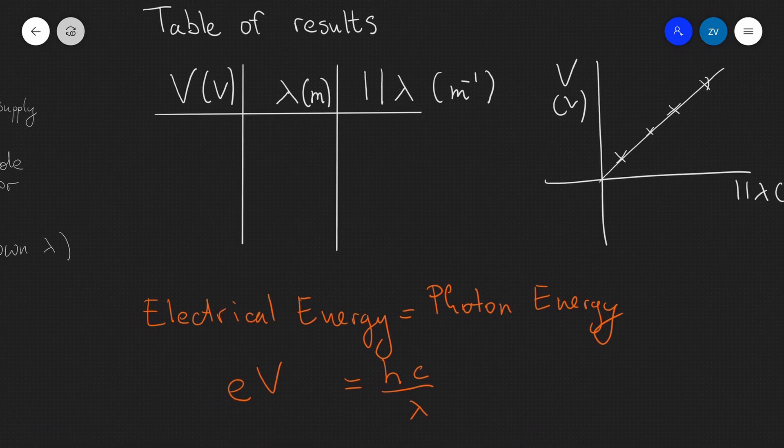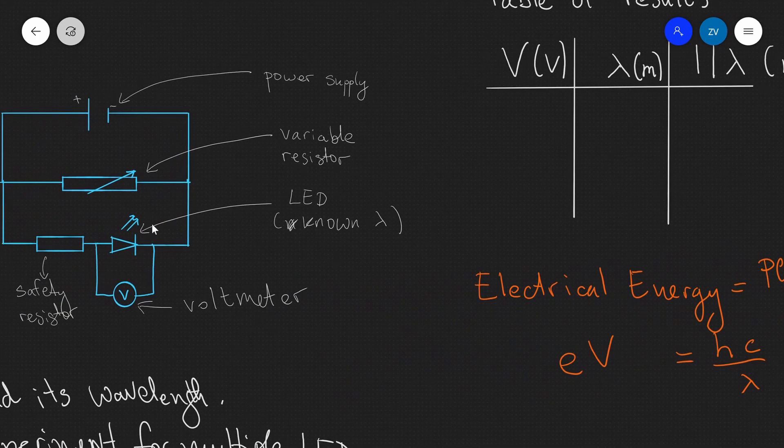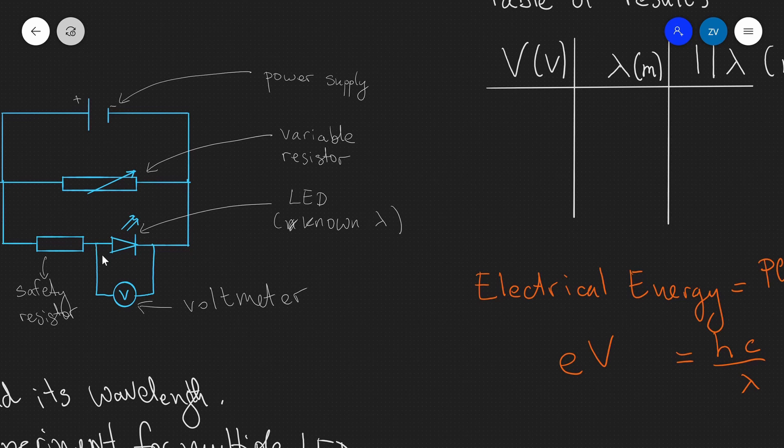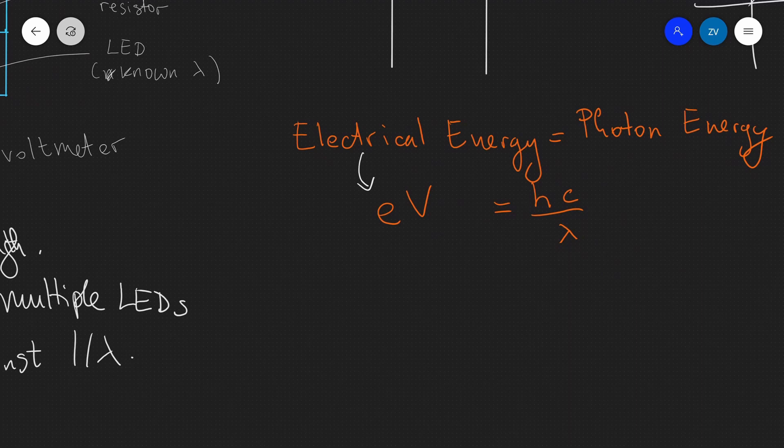Well, in this experiment, what we actually have is a conversion of electrical energy to photon energy. In other words, every time the LED produces a photon, electrical energy is being directly converted to the energy of a photon. The electrical energy is given by charge times potential difference, or eV. And the photon energy is given by hc over lambda.